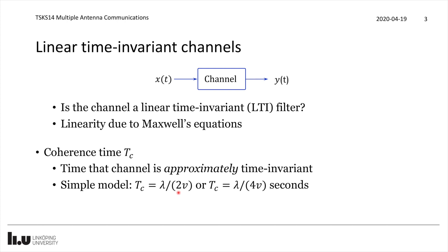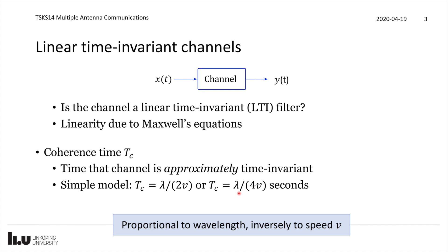This is essentially how long it takes to move half a wavelength. When the transmitter or receiver has moved half a wavelength the channel can have changed substantially, so it may be more conservative to use a quarter wavelength or even shorter. The important thing is that the coherence time is proportional to wavelength — as frequency increases, wavelength becomes shorter and so does the coherence time — and it is inversely proportional to the speed v.